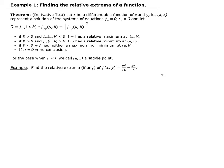We have to set the partials — the partial of f with respect to x and the partial of f with respect to y — we have to set both of those equal to 0, solve that system, and that's going to give us a critical number, or sometimes called a critical value. Then substitute and evaluate that into D. Depending on the sign of D, that will tell us whether we have a relative maximum or minimum.